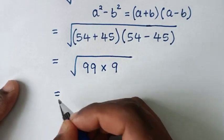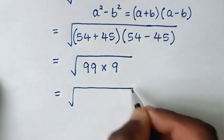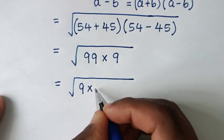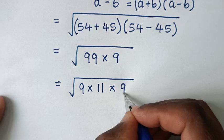Then it will be equal to square root of 99. 99 is same as 9 times 11, then times this 9.